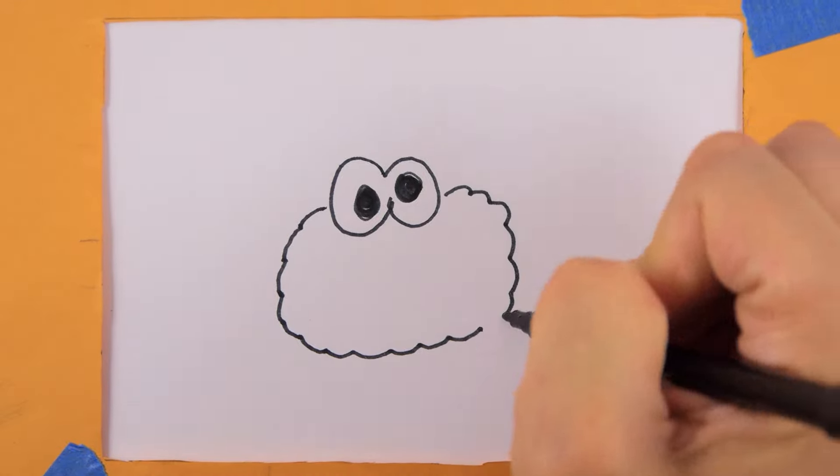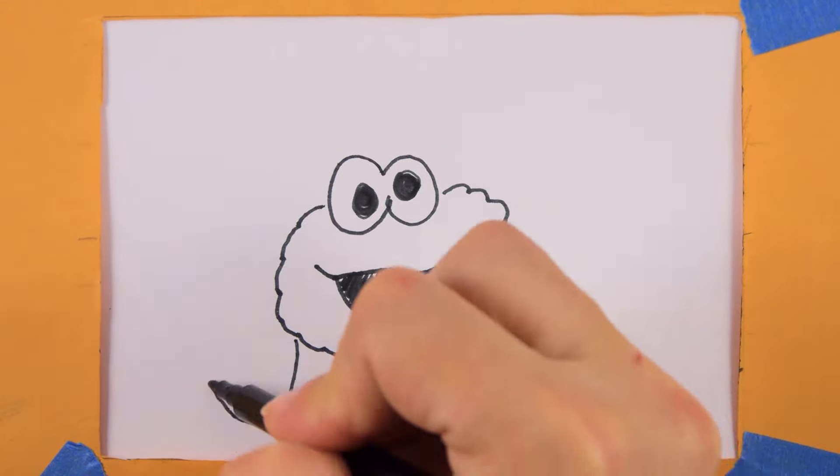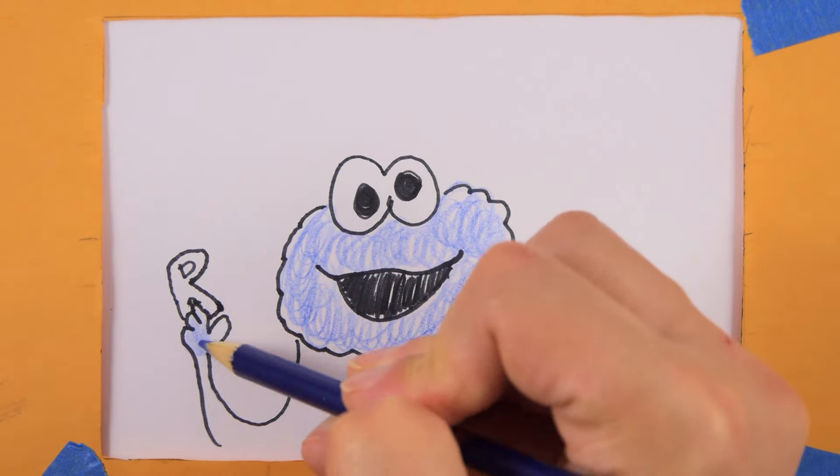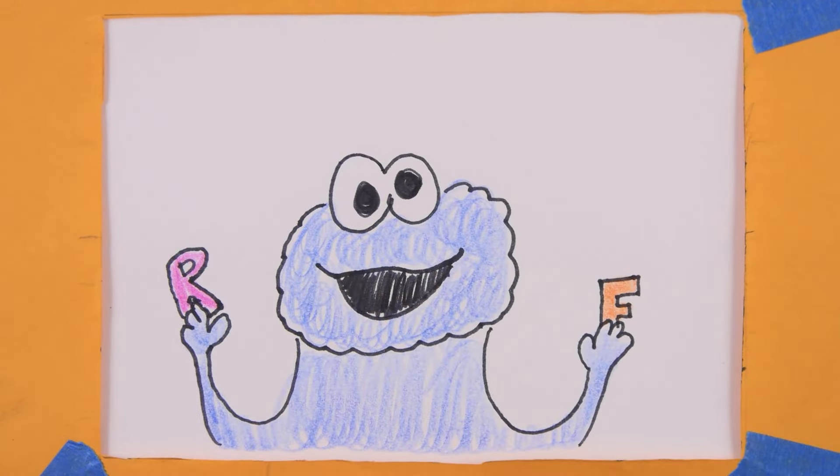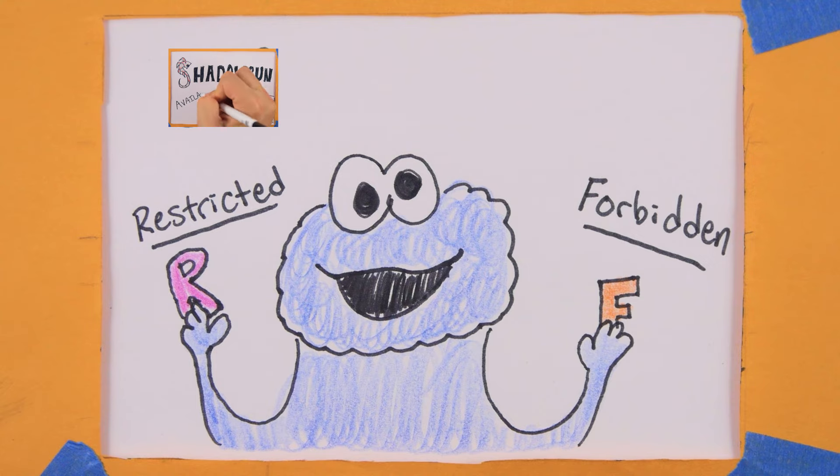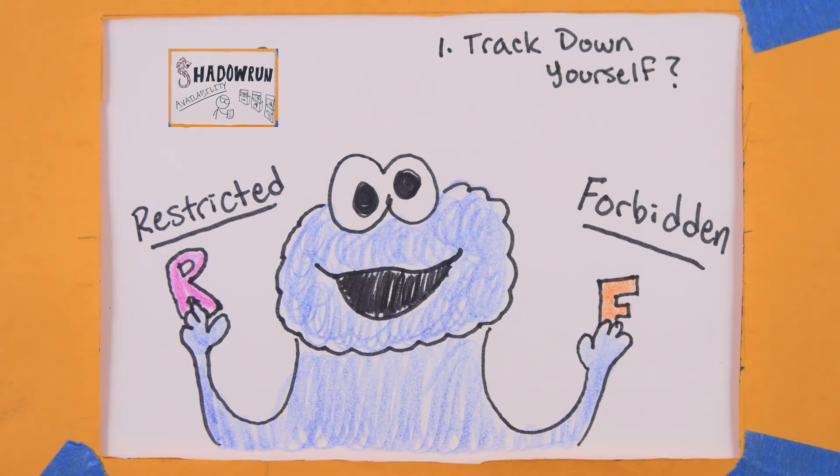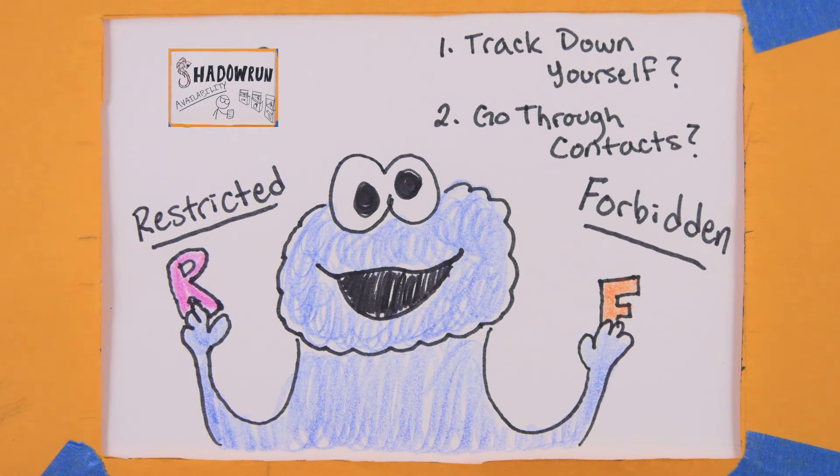In an earlier video, we talked about availability. If the gear you need has an R or F next to its availability number, you're going to have to find it on the black market. There are two ways to do this, other than theft of course: track it down yourself, or have a contact get it for you.